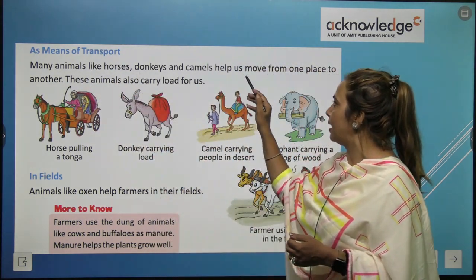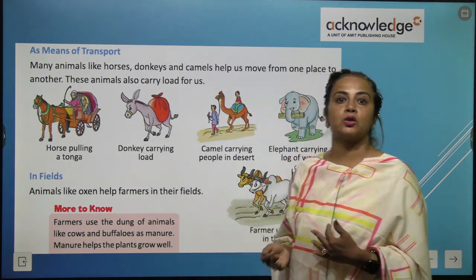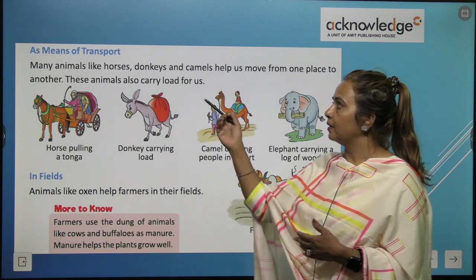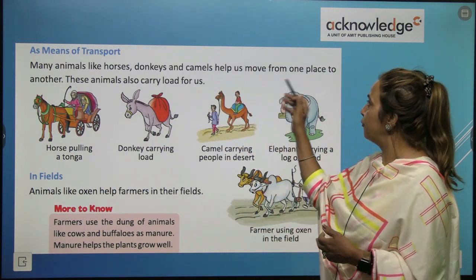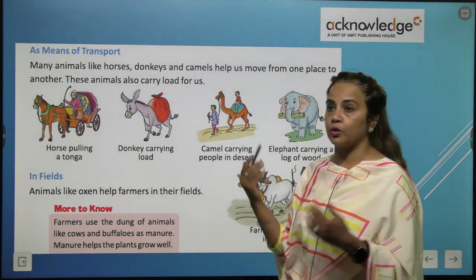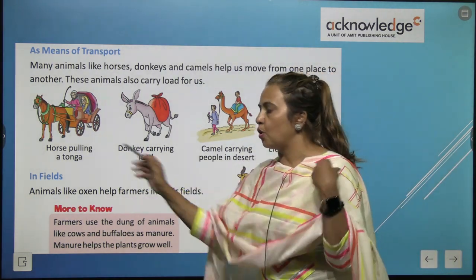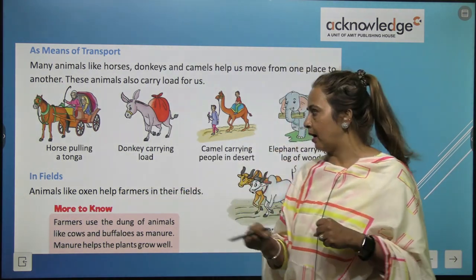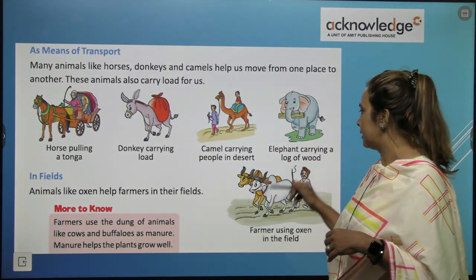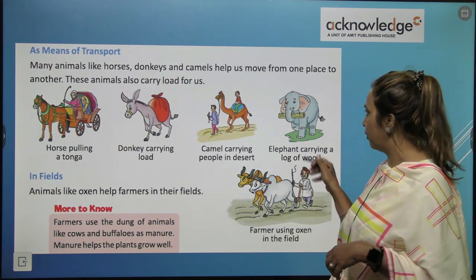As means of transport, many animals like horses, donkeys, and camels help us move from one place to another. These animals also carry load for us — horse pulling a tanga, donkey carrying load, camel carrying people in the desert, and elephant carrying a log of wood.